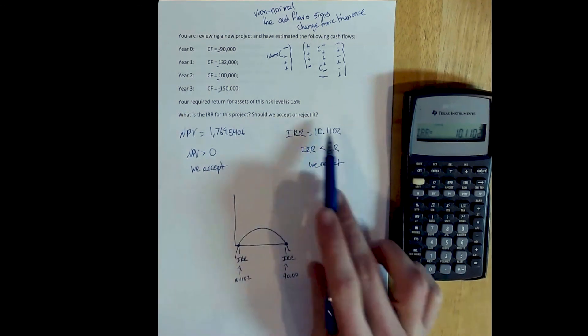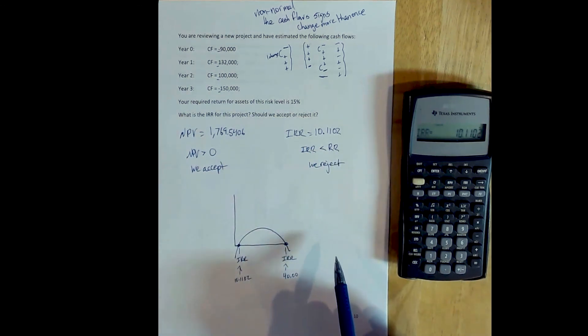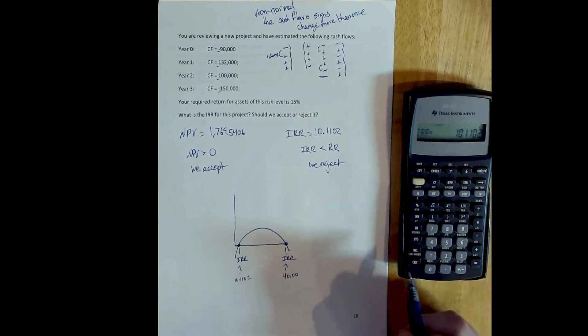And so when we have this case, we can't use the basic internal rate of return rule. However, the net present value rule is still correct.